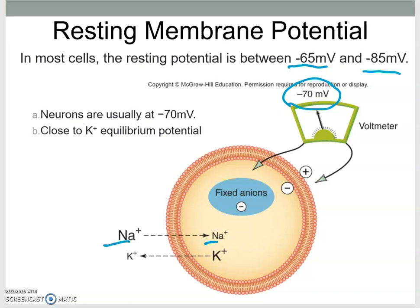Sodium is high on the outside, low on the inside. Potassium is high on the inside, very small on the outside. Plus, we have those fixed anions that contribute to the overall negative voltage of the membrane potential. Inside to outside, we are talking about minus 70 millivolts. That is close to the potassium equilibrium potential, which would be at minus 90 millivolts. It's definitely not close to the sodium equilibrium potential, which would be at plus 66 millivolts. We're pretty close to the potassium equilibrium potential because we have potassium leak channels that bring the membrane potential close to the equilibrium potential for potassium.